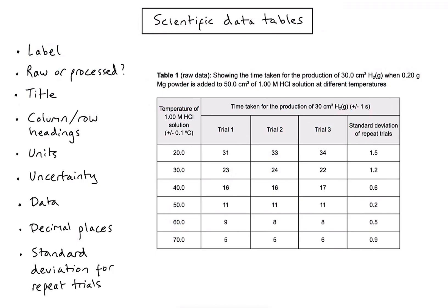We definitely need units in those headings. My temperature is in degrees centigrade, and the time on the right-hand side is in seconds. Also very important is including the uncertainty — specifically the absolute uncertainty of your measurement equipment — as the plus-or-minus value in brackets with the units. For temperature, using a thermometer or temperature probe, the absolute uncertainty might be plus or minus 0.1 degrees centigrade. For time using a stopwatch, I've taken the uncertainty to be plus or minus one second.